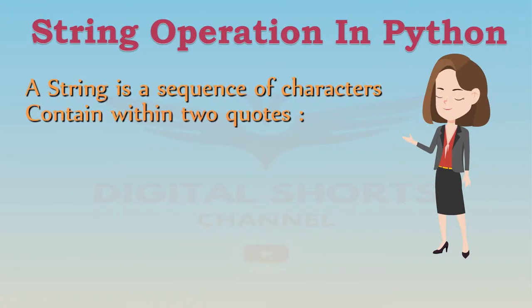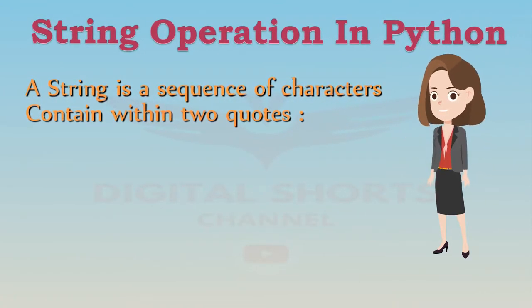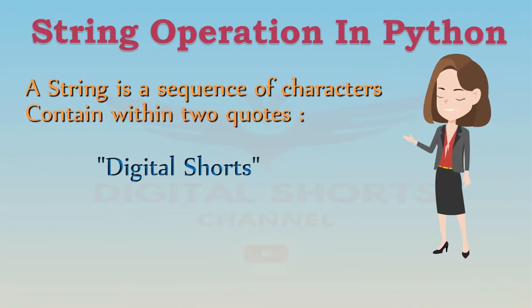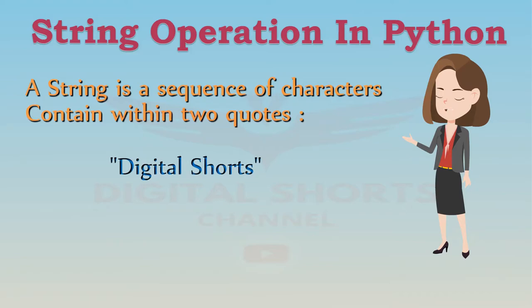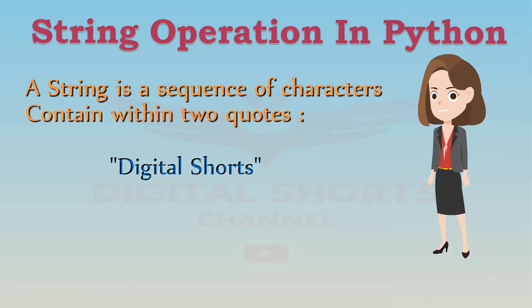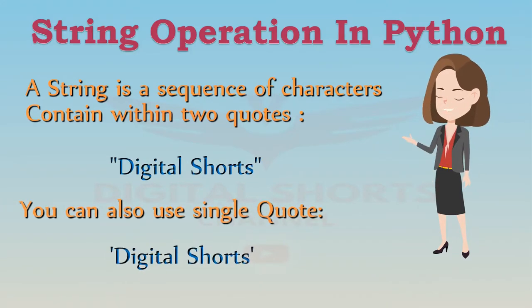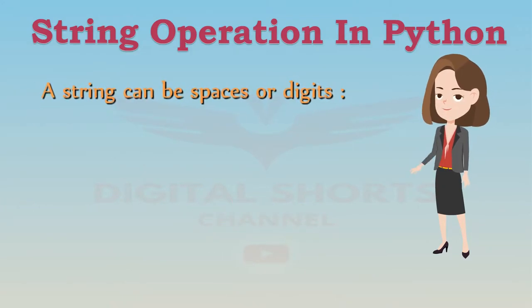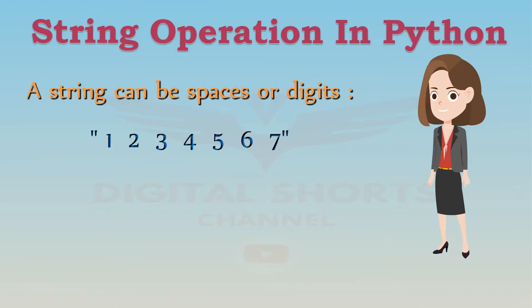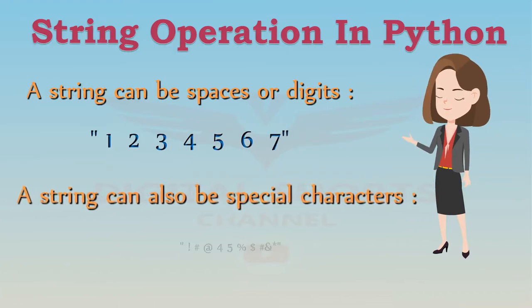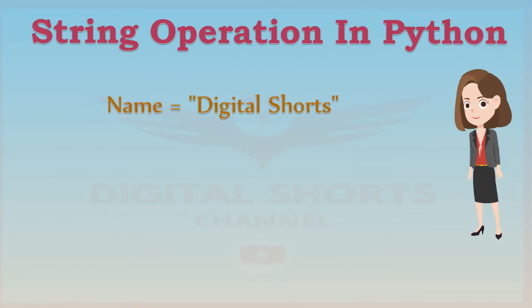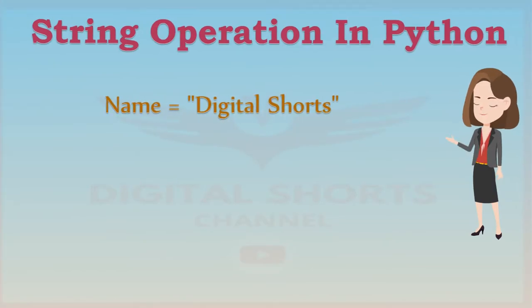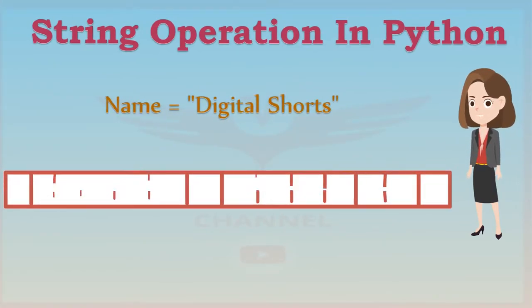In Python, a string is a sequence of characters. A string is contained within two quotes. You could also use single quotes. A string can be spaces or digits, and can also include special characters. We can bind or assign a string to another variable.